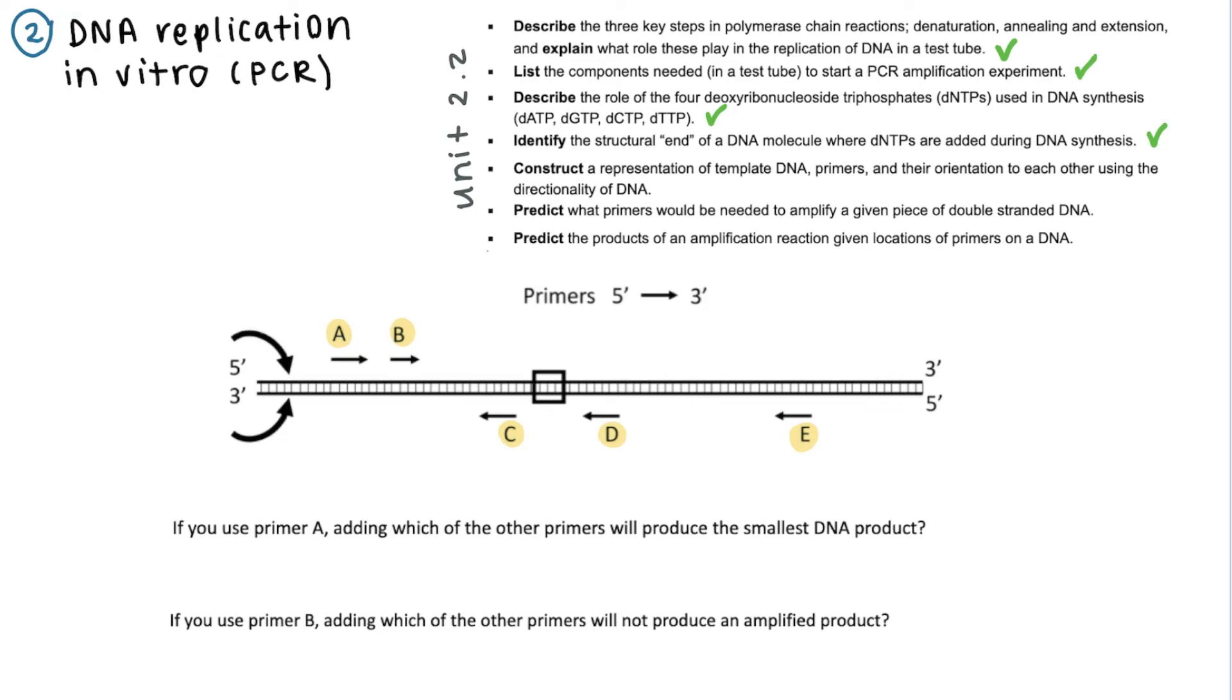Which of the other primers will yield the smallest DNA product? So if you use A and which other primer will you make the smallest sequence? So if we look at the trajectory that A will cover and then test it against the trajectory of each of the primers that is on the opposite strand.